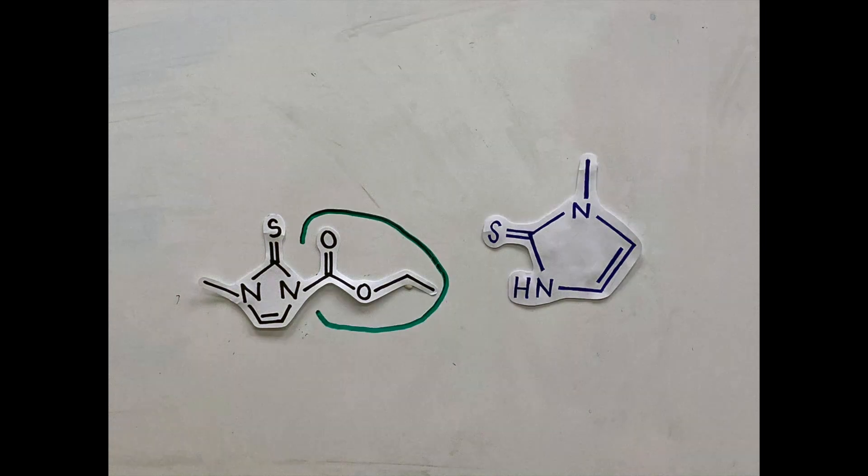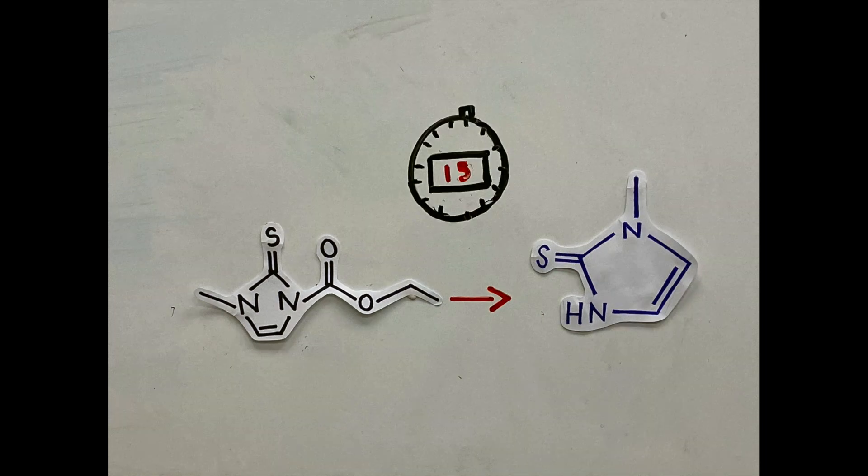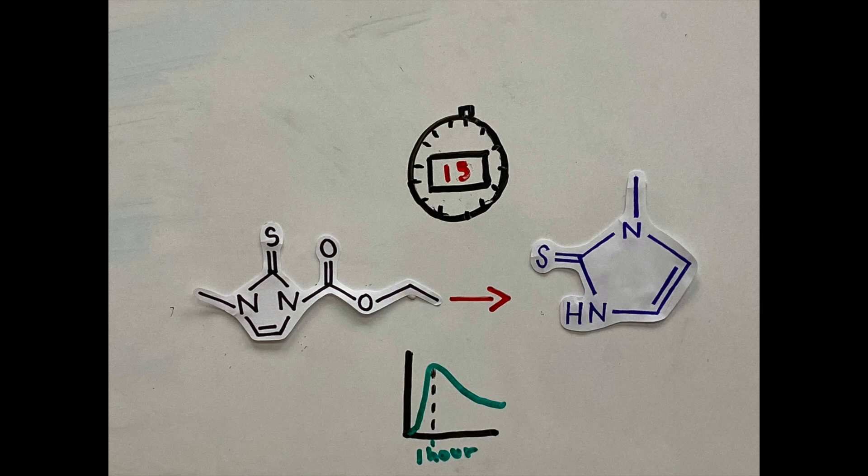In carbamazole, a carbethoxy group blocks the active group. Carbamazole can be metabolized into methimazole within 15-30 minutes in the body, with peak methimazole plasma concentration happening one hour after orally taking carbamazole.